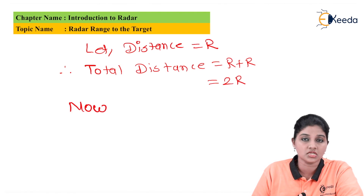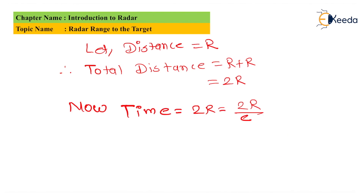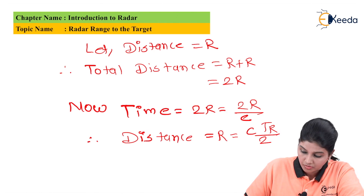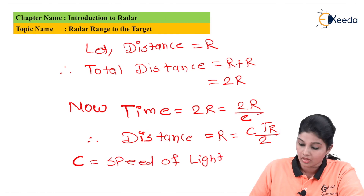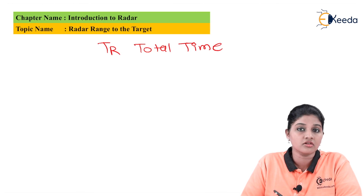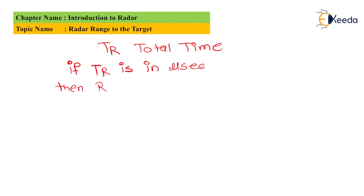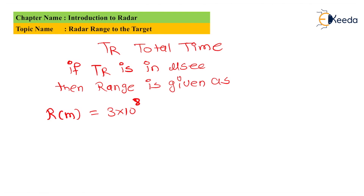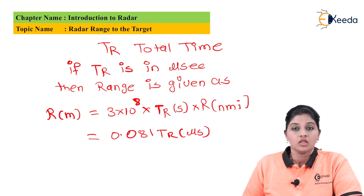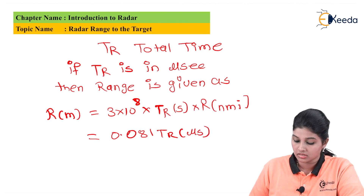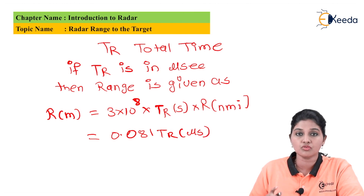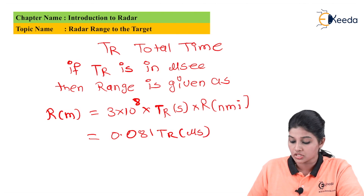The time taken by the signal to travel that total distance gives us the range formula: R = c·tr / 2, where c is the speed of light and tr is the total round-trip time. If tr is in microseconds, the distance is calculated as R = 3 × 10⁸ × tr seconds, which equals 0.081 × tr microseconds in nautical miles (nmi), where 1 nmi equals 1 nautical mile.